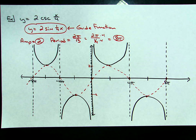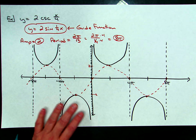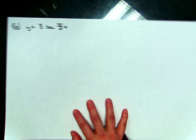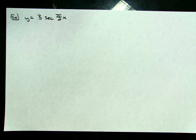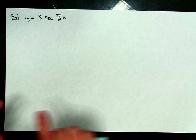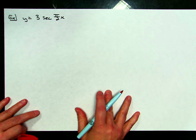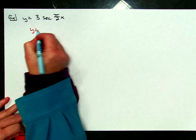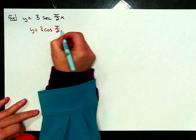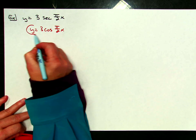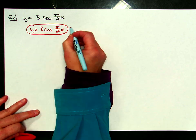So there's an example of cosecant. Now let's go ahead and do a secant graph as an example. On this one, I'm going to use cosine as my guide function, so I would have y equals 3 cosine of pi over 2 times x. This would be my guide function.